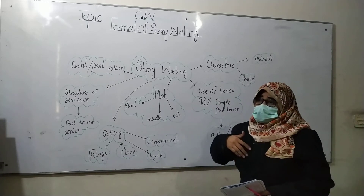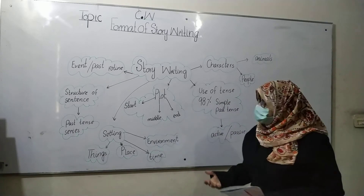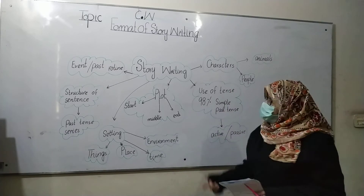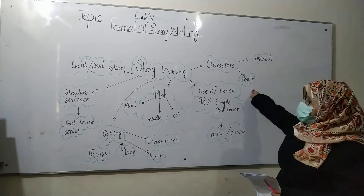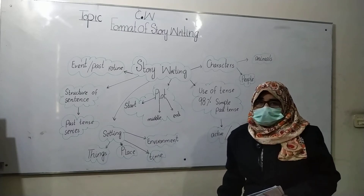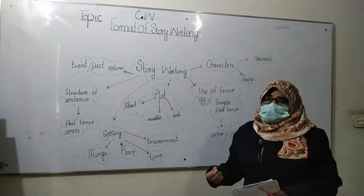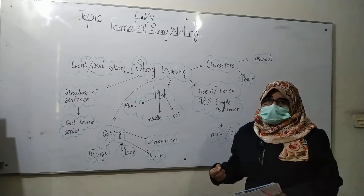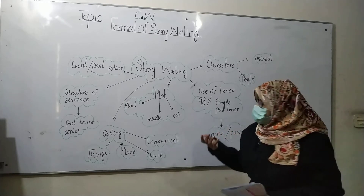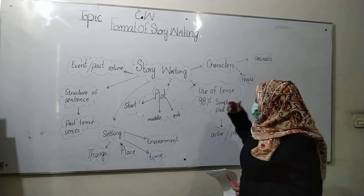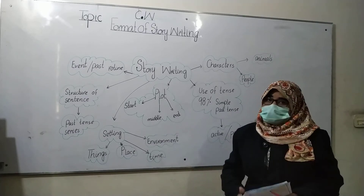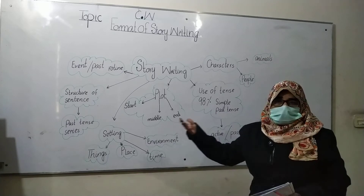Next are the characters. What type of characters does our story have? Our story has two types of characters: animals and people. For example, 'Once upon a time, I saw a thirsty crow — it was thirsty and it flew here and there.' That is related to animals. Or consider 'the lion and the slave' — the slave is a person. So a story can include both animals and people.